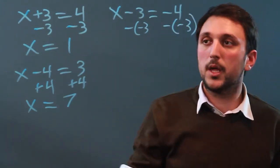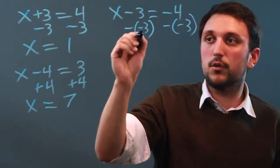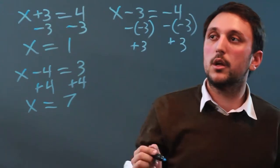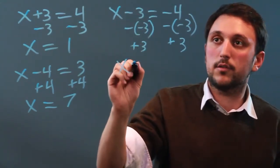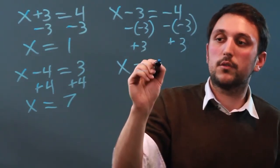But when you subtract a negative number, it becomes adding. So this is really just saying plus 3 and plus 3. So, x minus 3 plus 3 is actually just x. And minus 4 plus 3 is just negative 1.